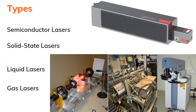Liquid dye lasers have a medium that is liquid. Gas lasers have gases as their medium — maybe nitrogen, carbon dioxide, or argon. Gas lasers are mostly used for industrial purposes to meet industry needs. There are also chemical lasers, which are among the most common types.